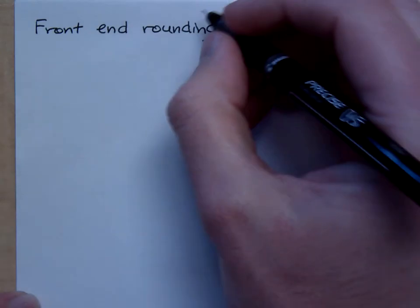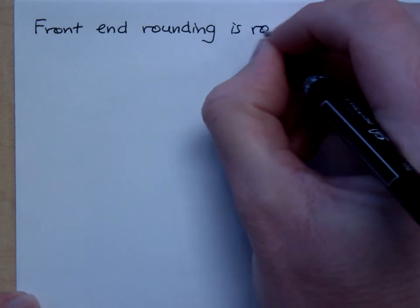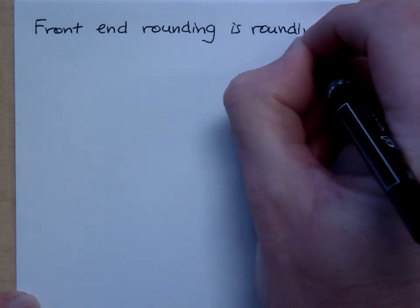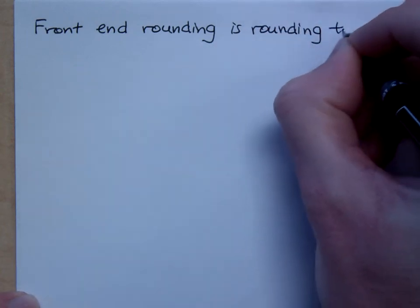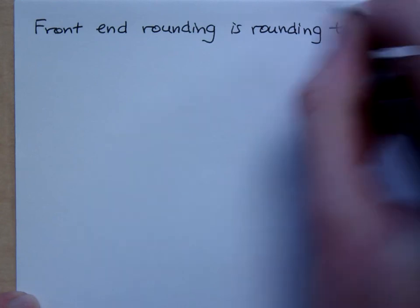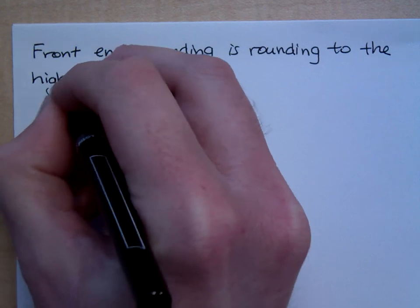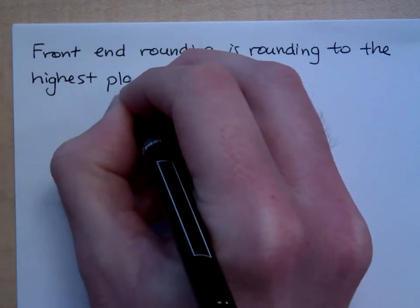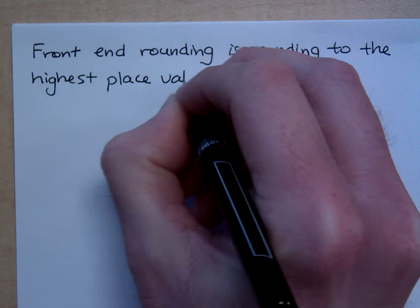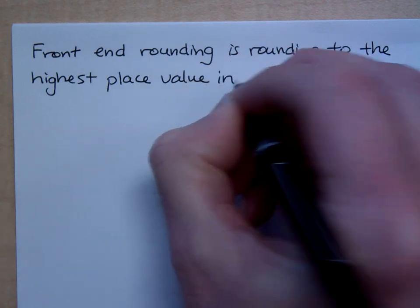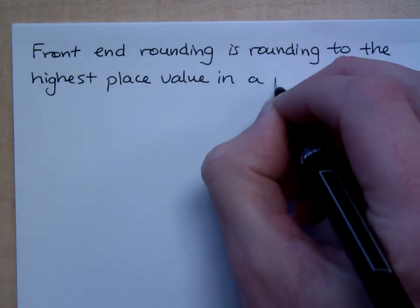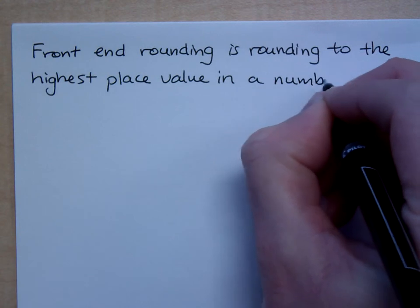Front-end rounding is rounding to the highest place value in a number. It's rounding to the highest place value in a number.